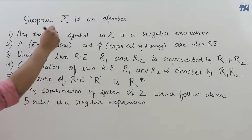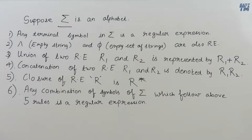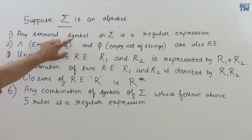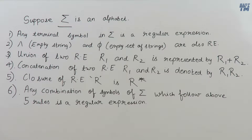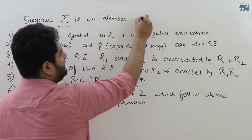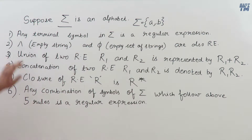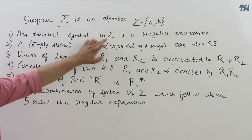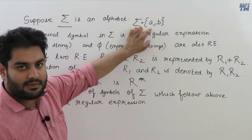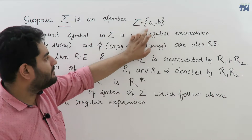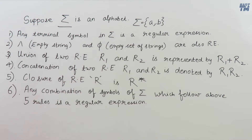Here are some important properties of a regular expression. Suppose sigma is some alphabet containing terminals or symbols. Then any terminal symbol in sigma will be a regular expression. For example, if sigma contains a and b, then both a and b are regular expressions.